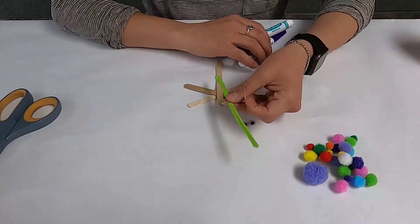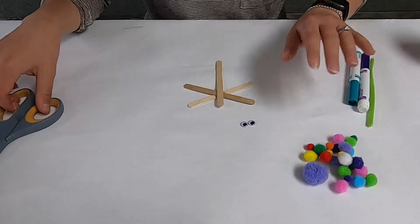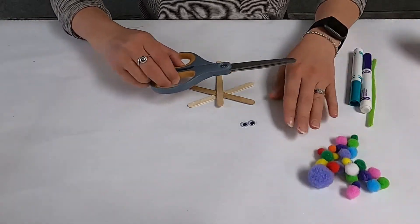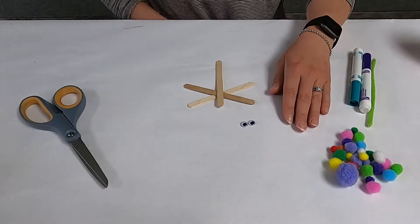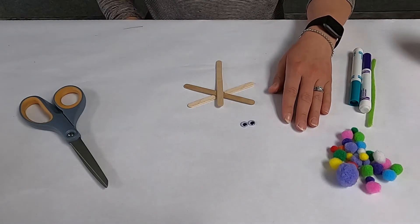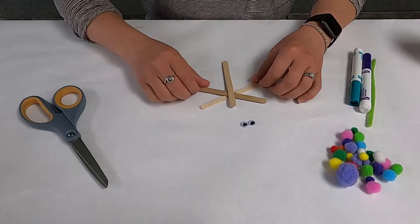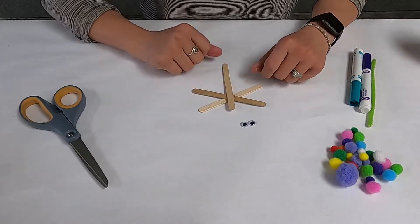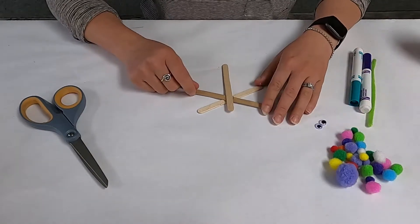Maybe some markers and pipe cleaner, and then we'll need some scissors of course. Now for this activity, you do need to use hot glue, so there is definitely parental supervision involved. They also sell cool hot glue, so the temperature is not as hot for little ones.